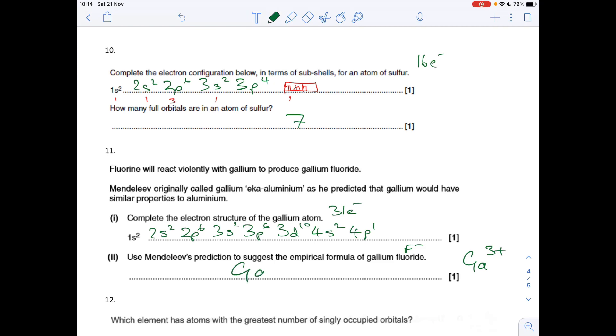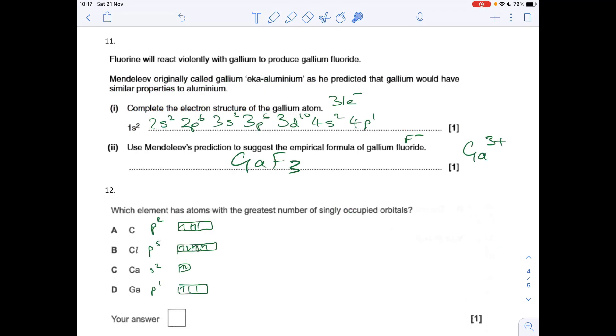Question 12: which element has atoms with the greatest number of singly occupied orbitals? I've gone for the outer configuration and then expressed it in electrons in boxes format. Everything before this subshell is all full, so they're all paired. You can see carbon's got two singly occupied orbitals, chlorine's got one, calcium doesn't have any because it's s2, and gallium has one as well. So the answer was a, carbon.